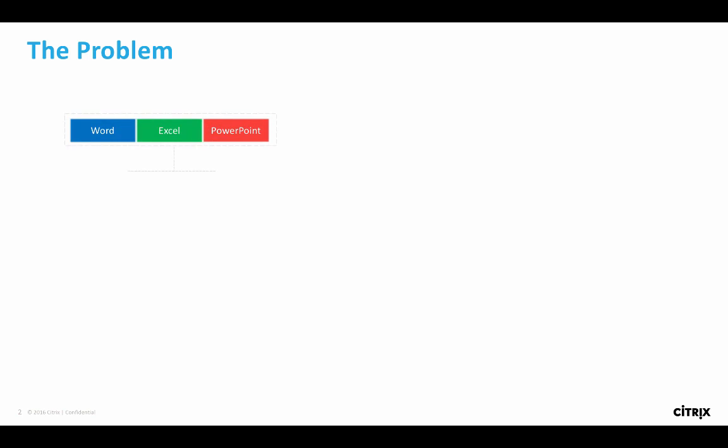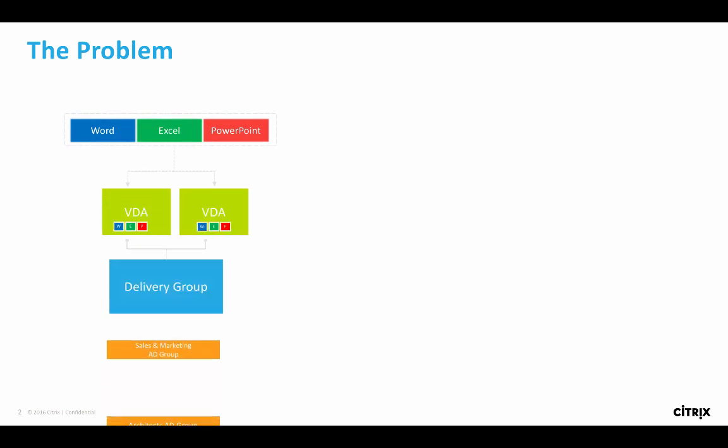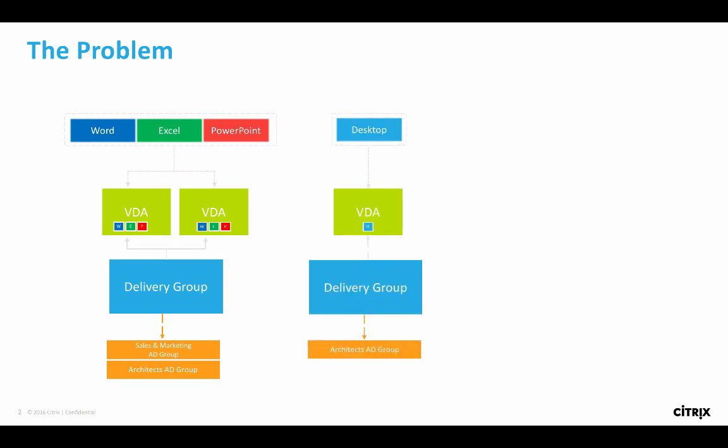I just want to walk you through one of the challenges today. If you look at delivery groups, what our customers are doing — or having to do — is create delivery groups with specific VDAs in them to control the launches. If they want to be more specific about what launches are done on which VDAs, then they have to split those up into different delivery groups. From an end user perspective, they log on to Storefront, they see the apps, and that's perfectly fine.